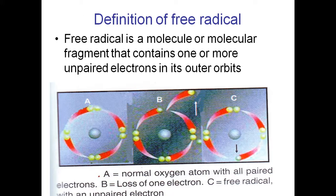Unpaired electrons means single electrons. If you see the diagram, in structure A all electrons are paired — two electrons in each orbit. But in structure B, one electron has been removed from the atom or molecule, so it has become a free radical. In structure C there is also one single unpaired electron, so this is also a free radical.